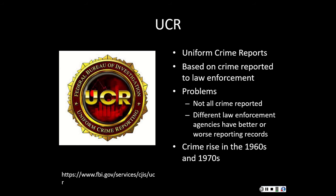However, there are problems with the UCR. Not all crime is reported to law enforcement. For example, anytime someone under the age of 21 drinks alcohol, a crime has been committed — but do police hear about every instance of underage drinking so that we can have a valid number? The other issue is that different law enforcement agencies have better or worse records in reporting crime. There's also an issue of officer discretion, where one law enforcement agency may want to be very stringent about enforcing laws regarding marijuana, while another may not feel the need to record a marijuana offense as a crime.